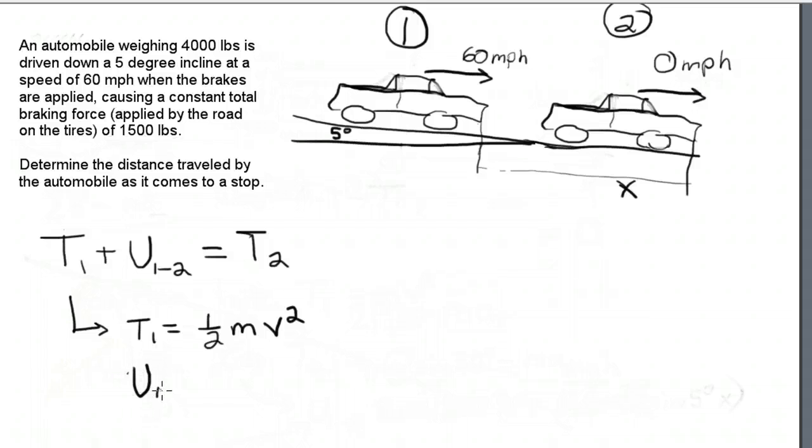For U1 to 2, we have two components. One is just a constant. We've got a constant total braking force of 1,500 pounds, and so we'll write this one. 1,500 pounds is the force applied, and the energy is the force times the distance. The distance is x, that's how far we go. And then the second factor we have here is the change in potential energy, because this car is traveling downhill. How far does it travel downhill? The change in potential energy is the mass times the gravity times the height traveled, or the height difference. And we can write that as just x times the sine of 5 degrees.